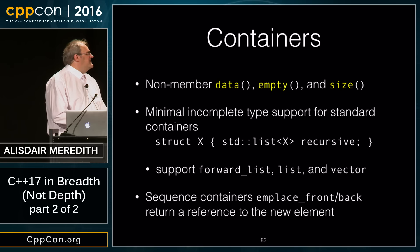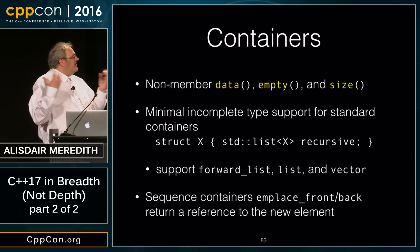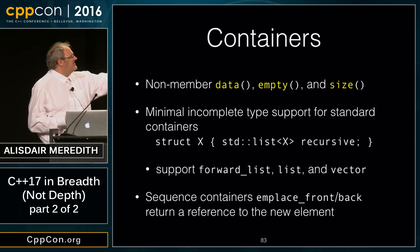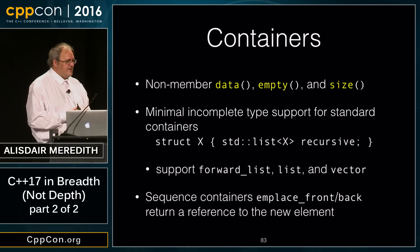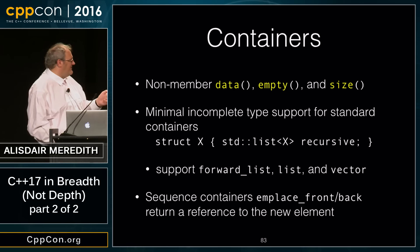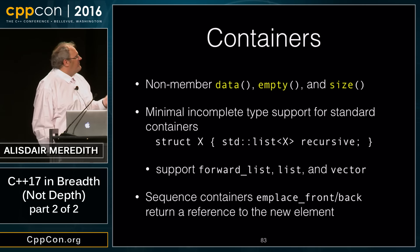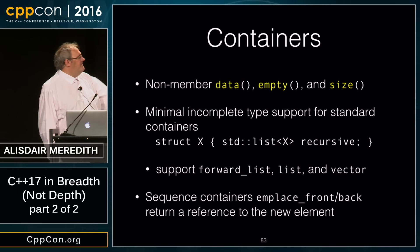Other container changes: non-member functions versions of data(), empty(), and size() are now common across containers. We also have minimal incomplete type support for forward_list, list, and vector — so a recursive struct with a `list<X>` data member works while X is still incomplete, as long as operations are only called when the type is complete. All existing implementations could support this guarantee for those three containers.